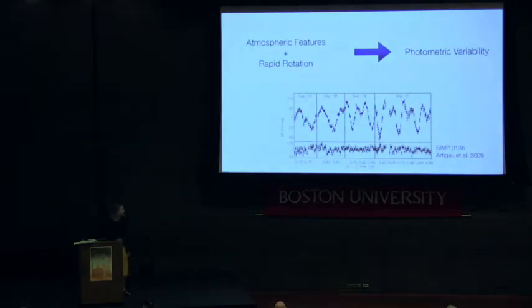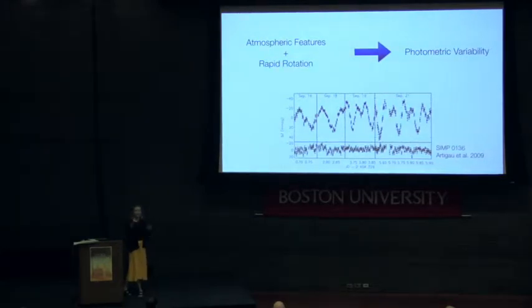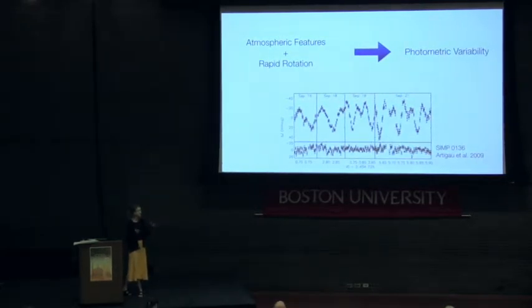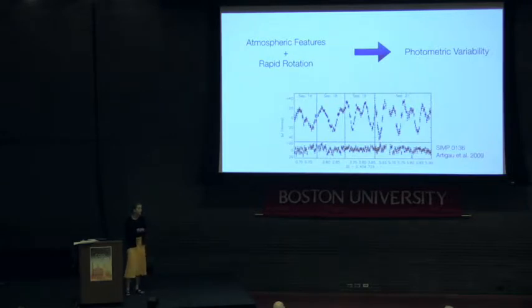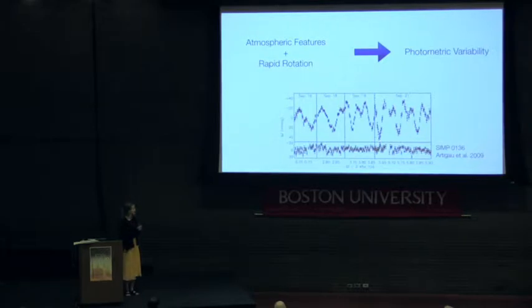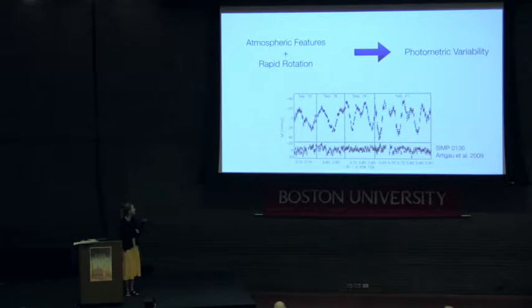First, a bit of background. Almost as soon as we detected brown dwarfs, it became clear that there were some sort of atmospheric features such as patchy clouds in their atmospheres. Combined with their fairly rapid rotation, this would produce photometric variability — modulations in the light curve as these patches of clouds rotated in and out of view. Searches for photometric variability began straight away, but it took pretty much a decade before we detected the first highly significant periodic detection in the T dwarf 2MASS 0136. As you can see, the light curve evolves pretty rapidly from night to night, but it's consistently variable and you can always see the same period, which is the rotation period of the object.